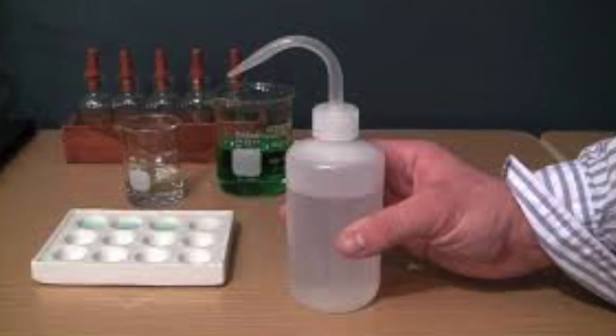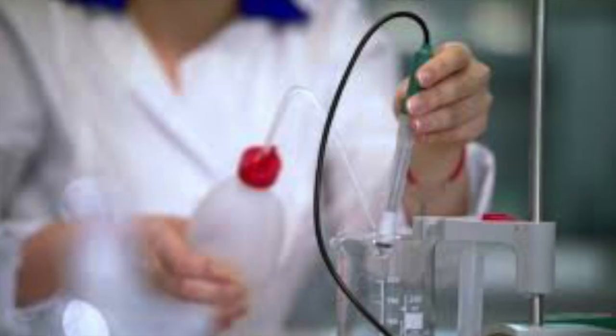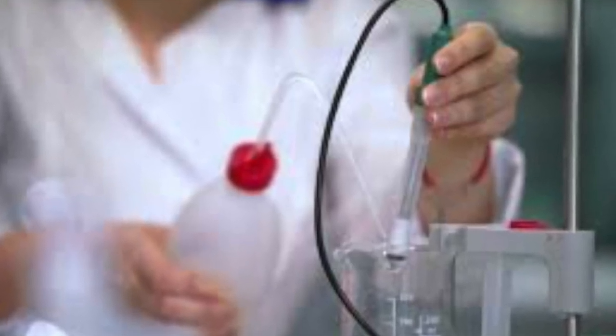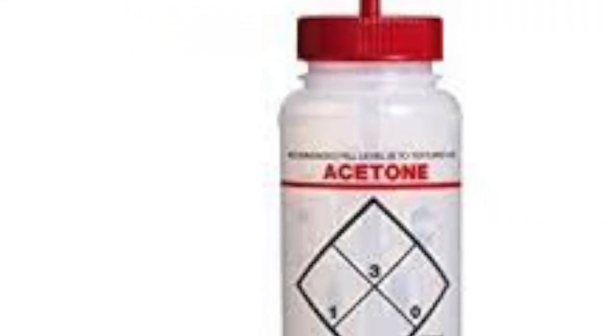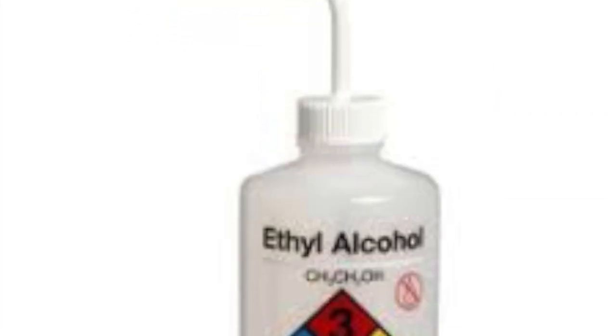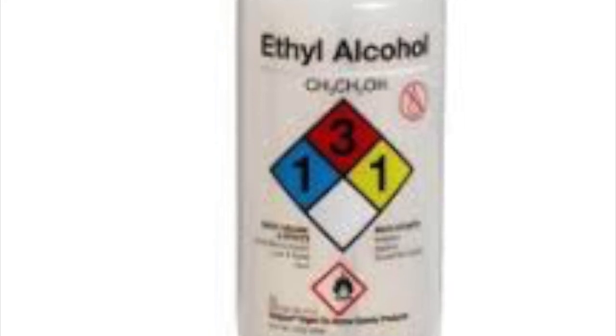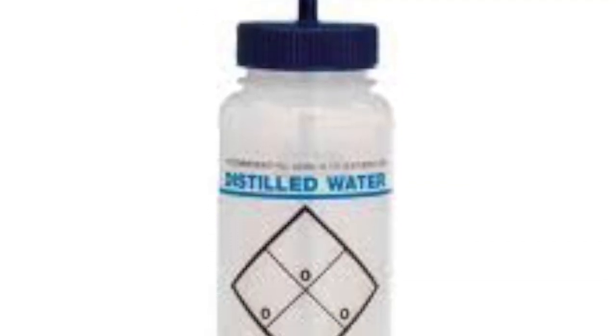The most common types of wash bottles are acetone, ethyl alcohol, distilled water, and tap water. Each bottle's cap is color-coordinated according to the type of substance contained within it. Red is used for acetone, white for ethyl alcohol, blue for distilled water, and clear for tap water.